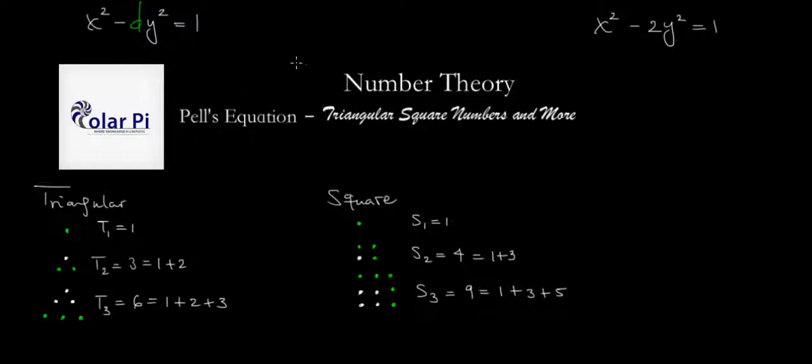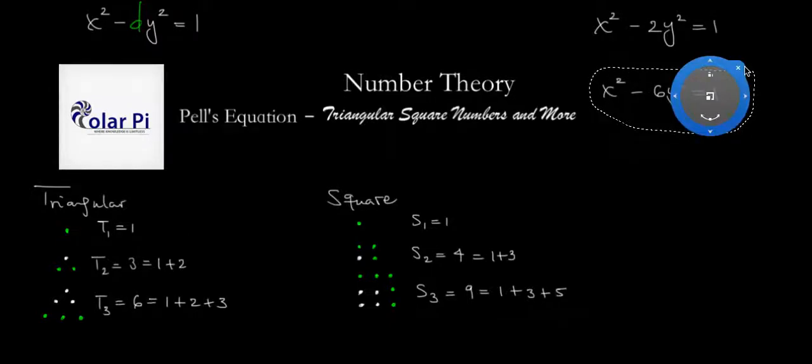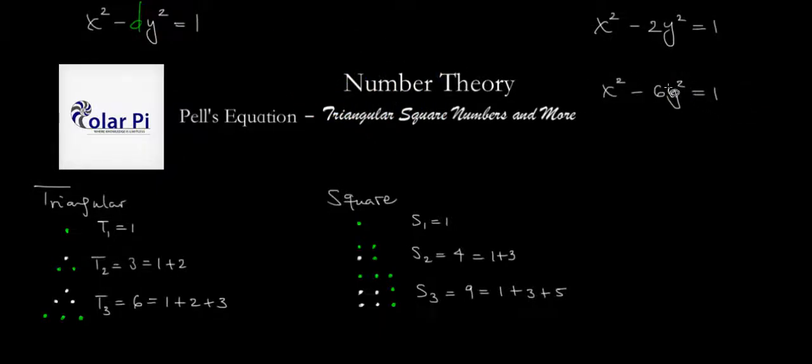But in that video where we talked about finding general solutions, we identified this as an interesting case, just like x squared minus 6y squared equals 1 is an interesting case. The reason these are both interesting is because solutions to this equation give us a way to find triangular square numbers.